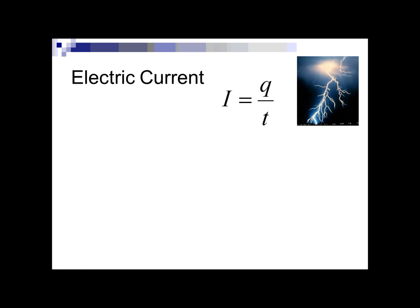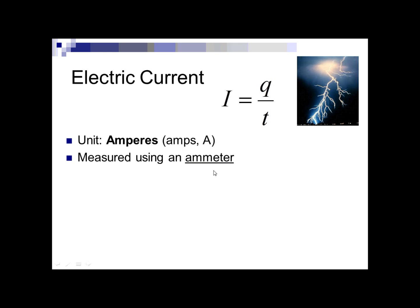Electric current — here's our equation. Current is represented by I. Q is charge and T is time. So current is how much charge is going through every second. The unit is amps or amperes, denoted by A. The amount of charge per unit time is measured in amps, and we measure this using an ammeter. Current, since it's measured in amps, uses an ammeter.